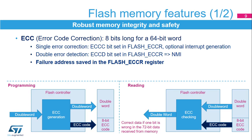Data and flash memory words are 72 bits wide; 8 bits are added per each double word of 64 bits. The ECC mechanism supports single error detection and correction and double error detection. The programming granularity is 64 bits, really 72 bits including 8-bit ECC, and 144 bits when single bank mode is used (2 times 72 bits).